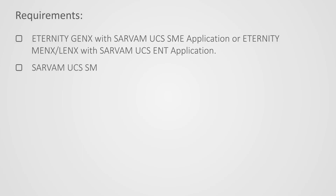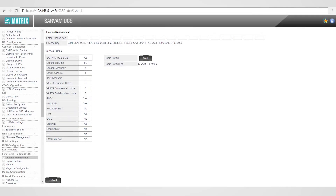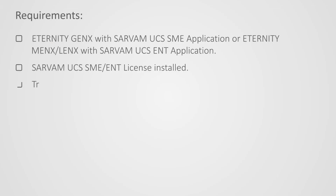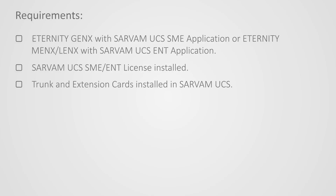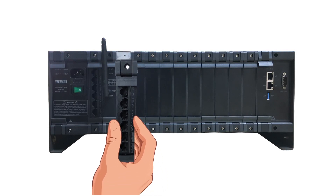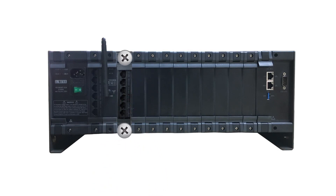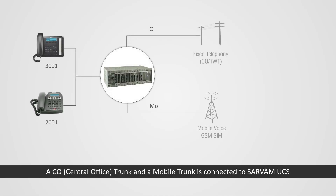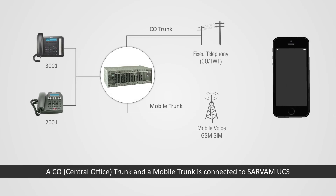Additional requirements include Servam UCS SME or ENT license installed, and trunk and extension cards installed in Servam UCS. Consider a scenario where a CO (central office) trunk and a mobile trunk are connected to Servam UCS on CO port 1 and mobile port 1 respectively.